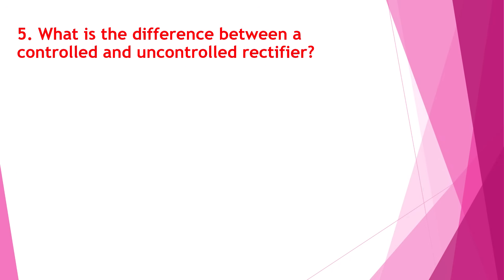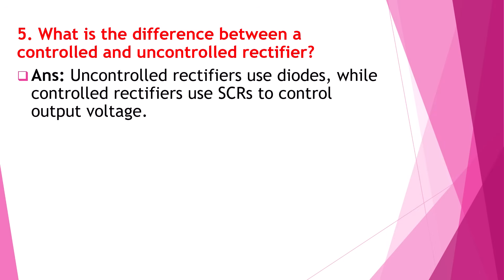Question number 5: What is the difference between a controlled and uncontrolled rectifier? Uncontrolled rectifiers use diodes, while controlled rectifiers use SCRs to control output voltage.